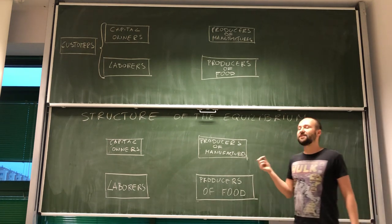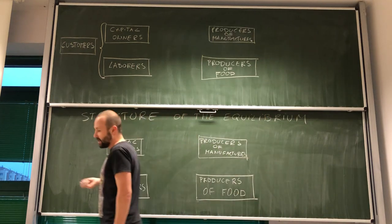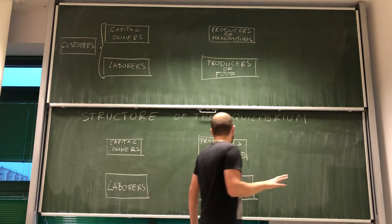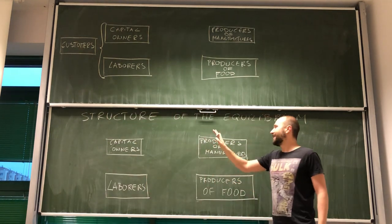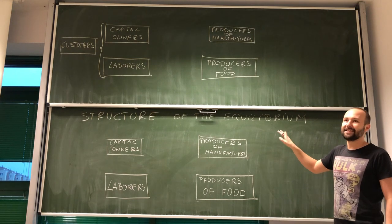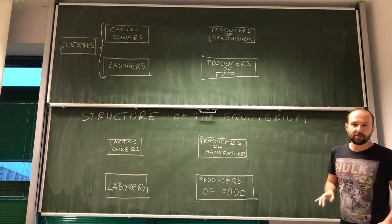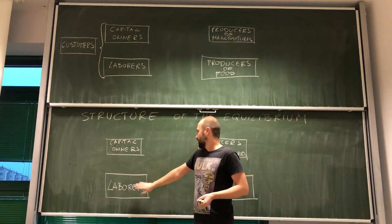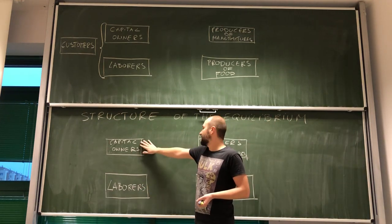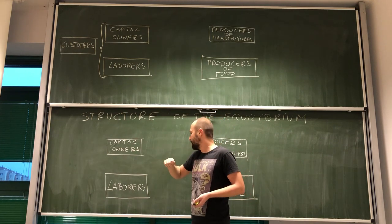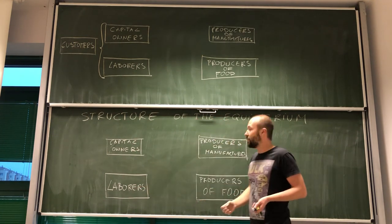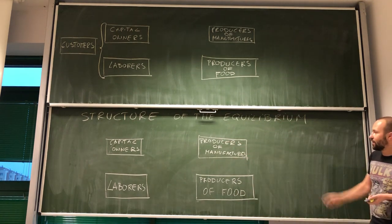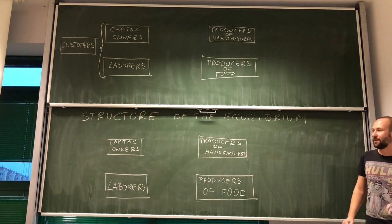Now look, this is a functional distinction. What does it mean? That basically, each agent in this economy can be engaged in at least one of these functions. Because we can actually imagine a person that is all four. This person, let's just say she is a capital owner, she works for one of the companies and she also owns two companies.